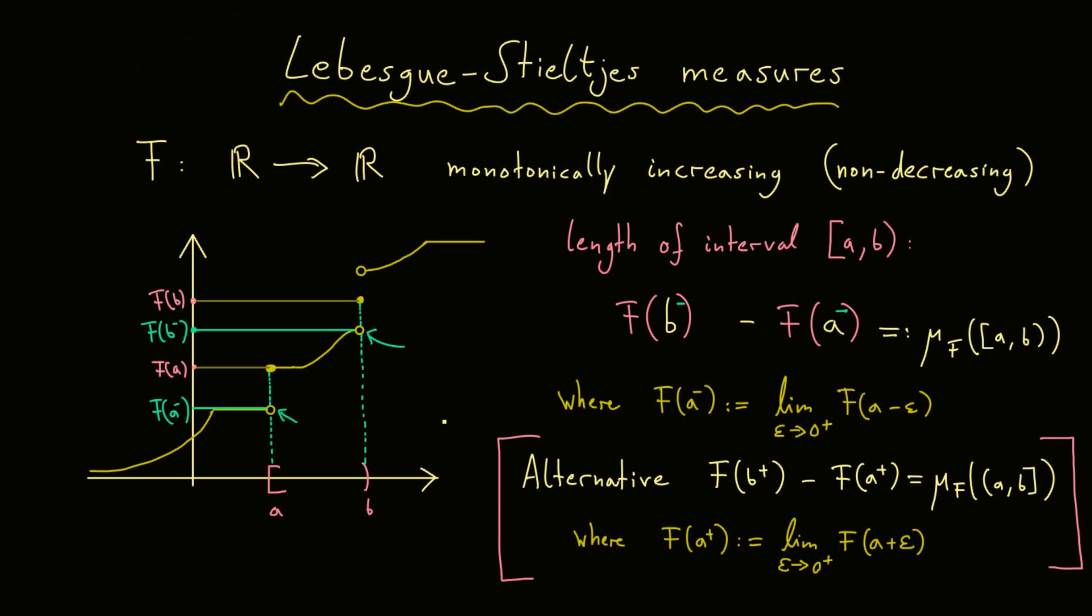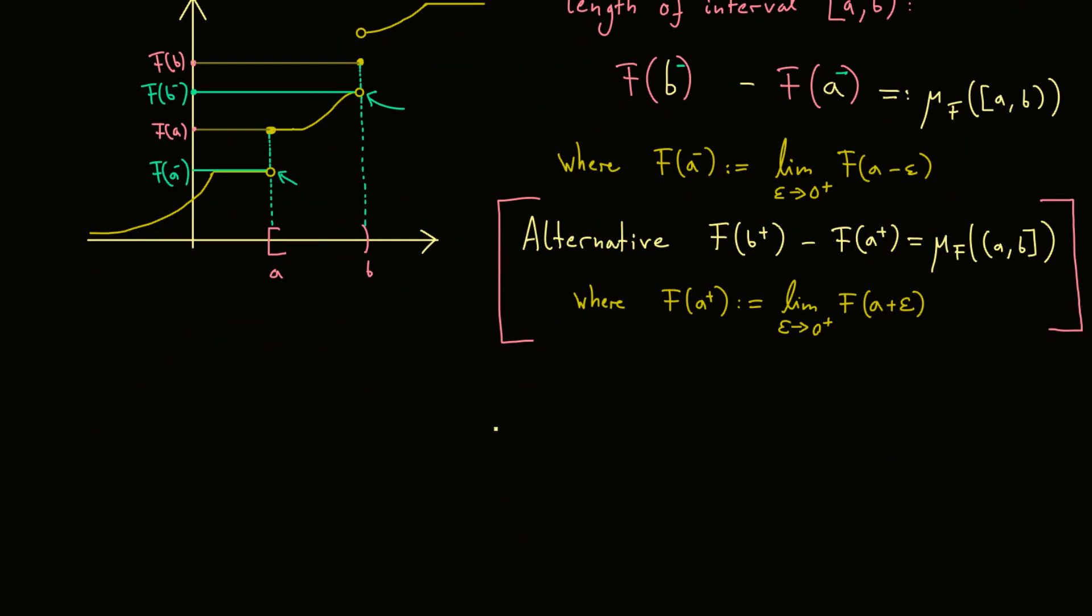Nevertheless, it's very important to note that if you look at the points where the function F is not continuous, then it does not matter at all where the value of the function at this point is. It only matters what the limit from the left hand side is, and what the limit from the right hand side is. Because these two points describe how large the jump is. So, as I said before, I want to work with these intervals here, because we know from another video that they form a so-called semi-ring.